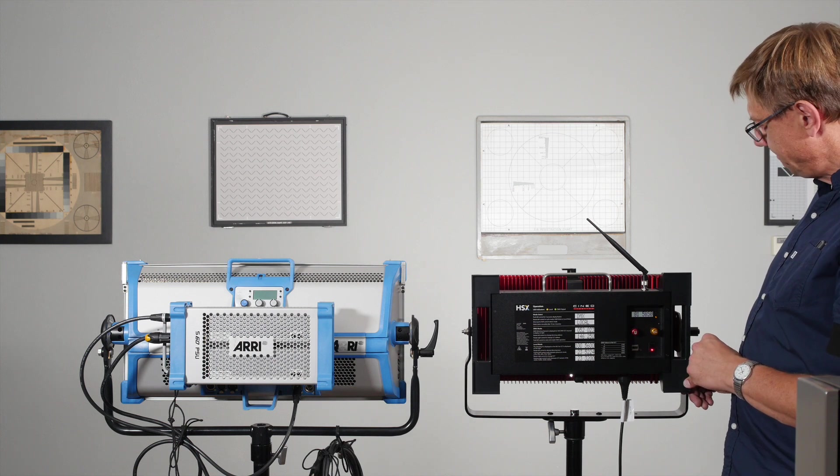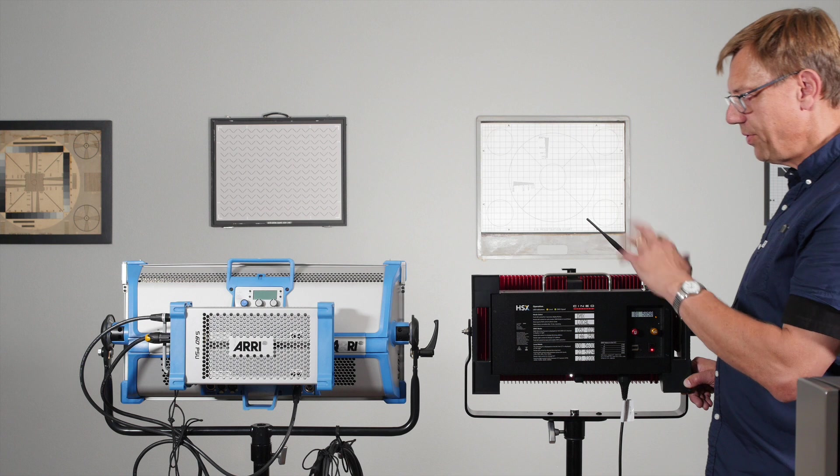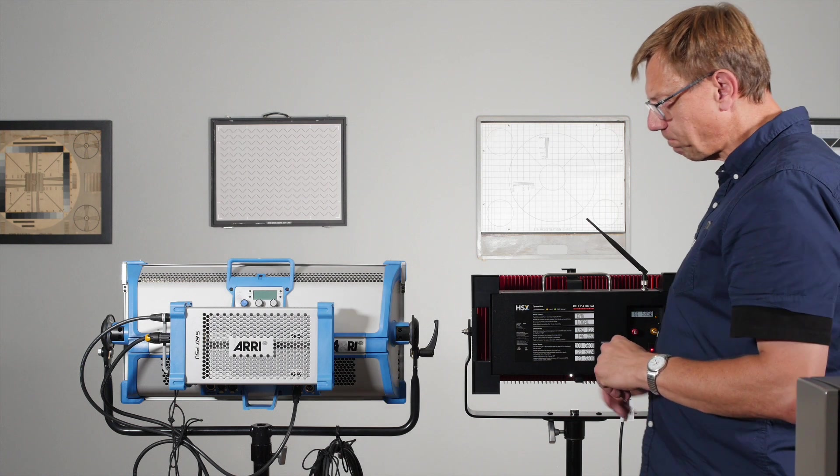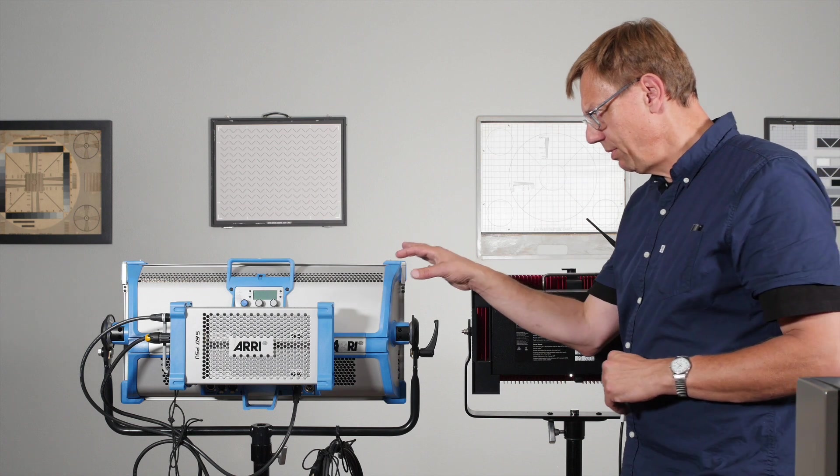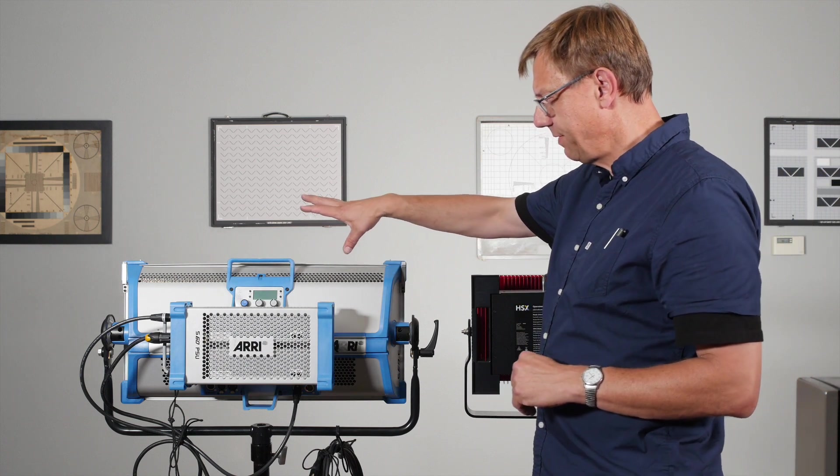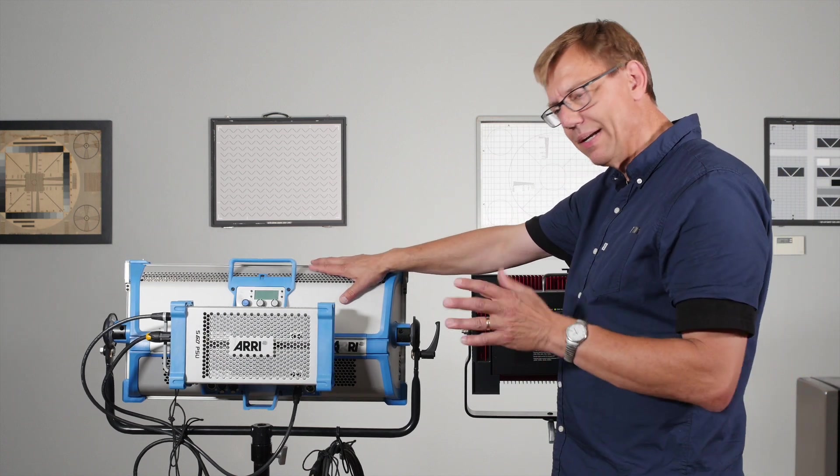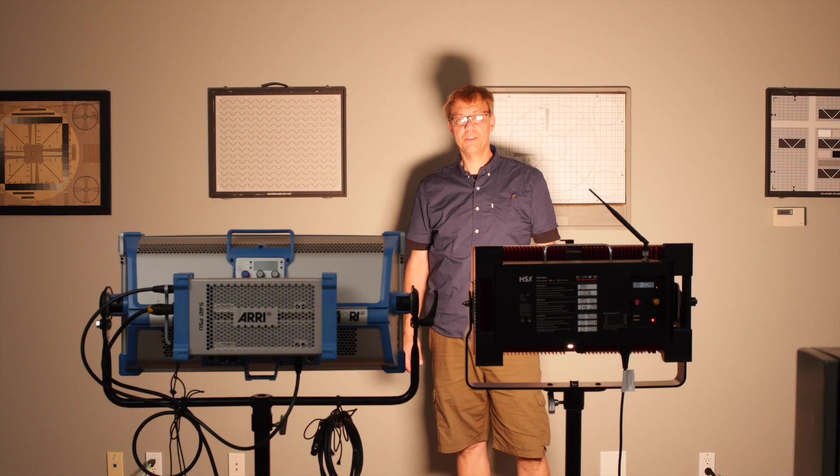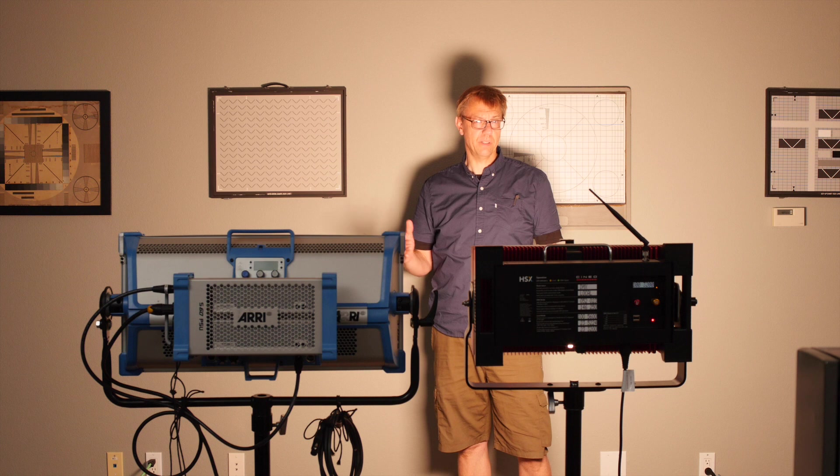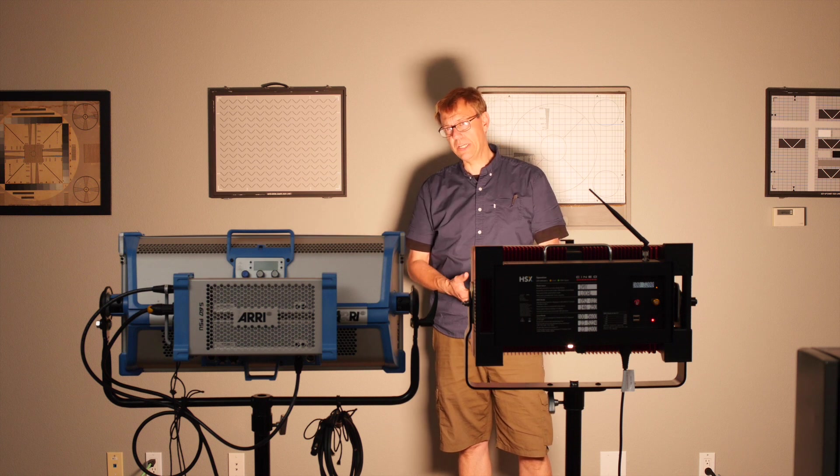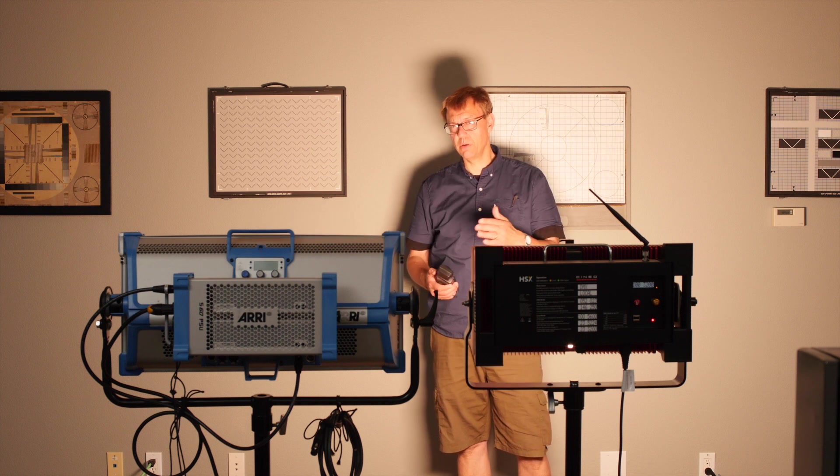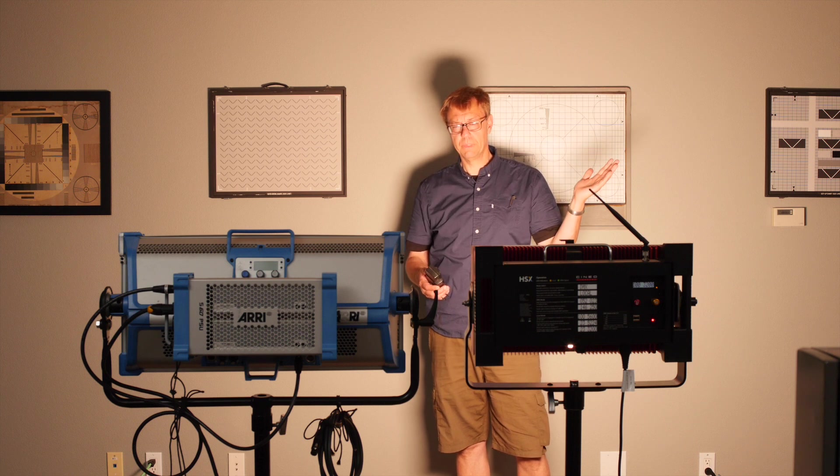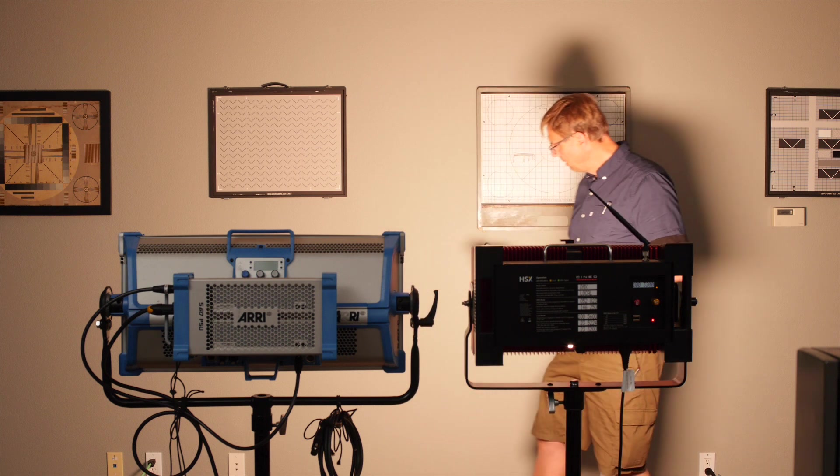Okay, so now let's turn both these guys on and meter them up. I'm not going to go through the dials and modes and stuff like that for the SkyPanel. That'll be on another episode. All right, let's compare these two lights first in terms of intensity at different color temperatures. So we'll start with the HSX at 3,200, 4,300, and 5,600.